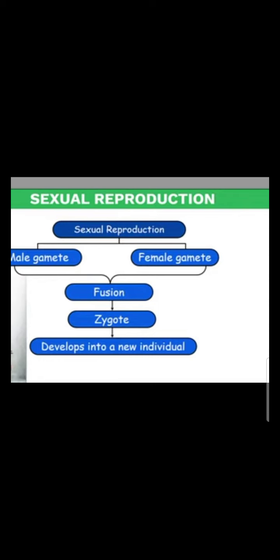Good morning students, welcome to the class. I am Rajni, your science teacher at DAB Police Public School Kaithal. Our topic is sexual reproduction. Sexual reproduction is the process of reproduction in which generally two parents — male and female — are involved. The young ones produced are similar to their parents because the characteristics of both parents are involved in the next generation, and fusion occurs to form the first cell, the zygote.